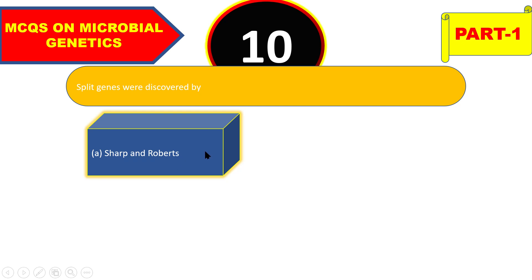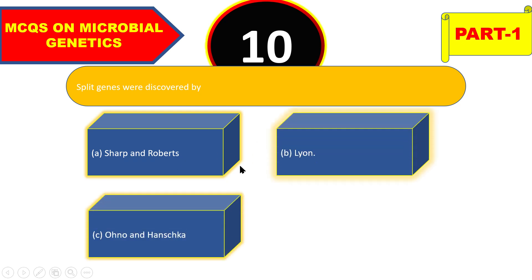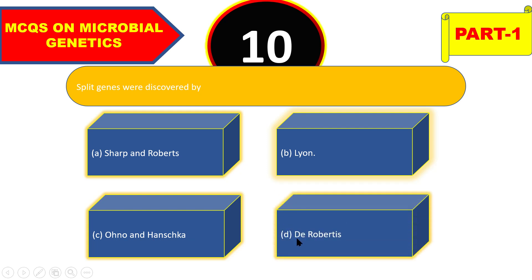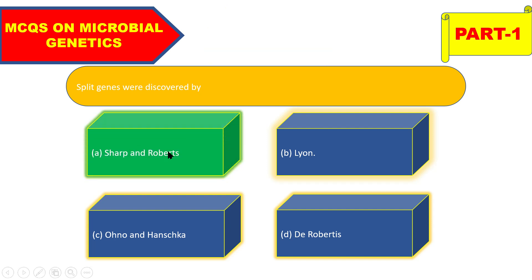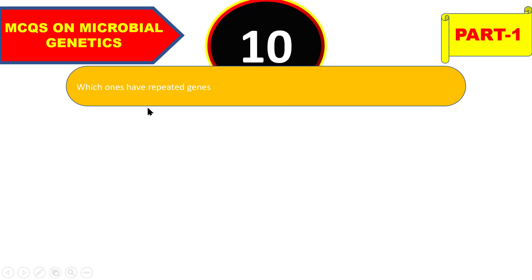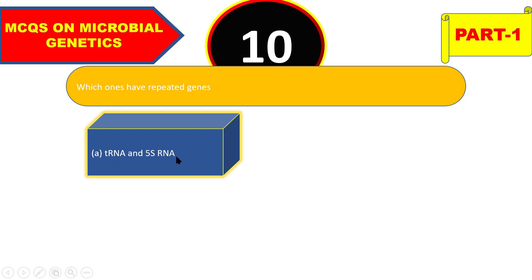Next question: split genes were discovered by Sharp and Roberts. The right answer is Sharp and Roberts.